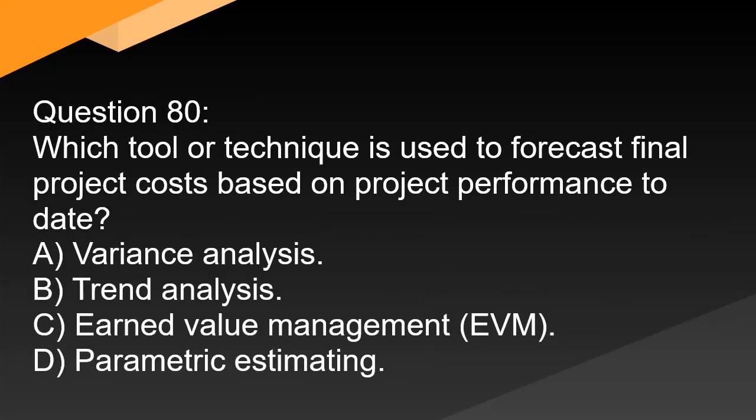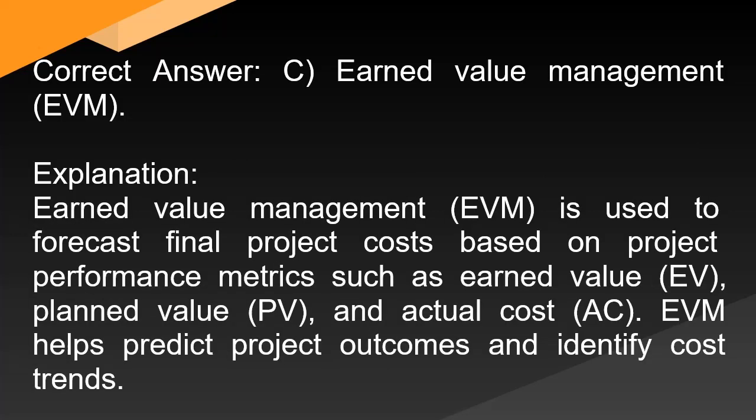Question 80: Which tool or technique is used to forecast final project costs based on project performance to date? A. Variance analysis. B. Trend analysis. C. Earned value management (EVM). D. Parametric estimating. Correct answer: C. Earned value management (EVM). Explanation: Earned value management (EVM) is used to forecast final project costs based on project performance metrics such as earned value (EV), planned value (PV), and actual cost (AC). EVM helps predict project outcomes and identify cost trends.